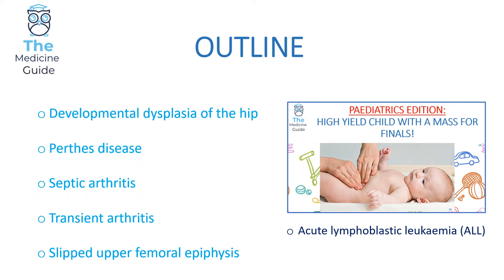The outline of today's video is that I'm going to discuss developmental dysplasia of the hip, Perthes disease, septic arthritis, transient arthritis, and slipped upper femoral epiphysis, because these are the high yield typical exam questions in medical school exams. Also, acute lymphoblastic leukaemia — ALL — is the most common leukaemia found in children and commonly leads to a child presenting with a limp. However, I've discussed this in my previous video called high yield child with a mass for finals, so I'd encourage you to look at that video for completion.